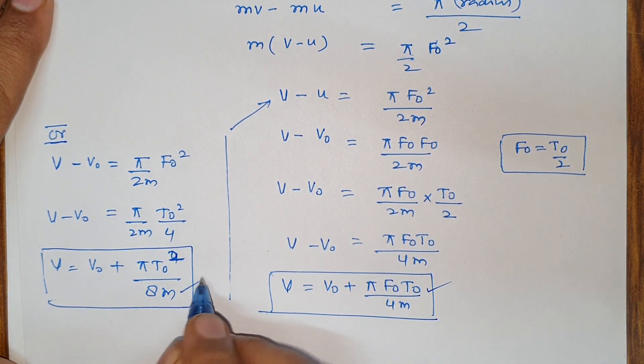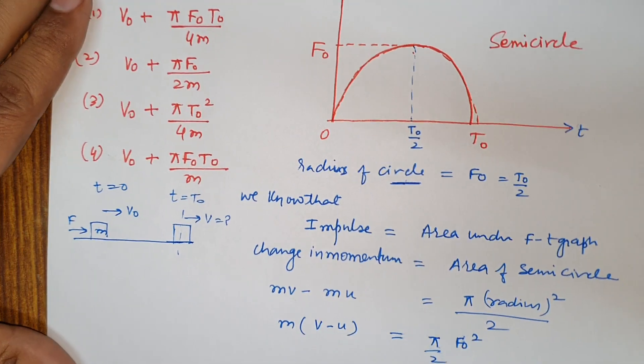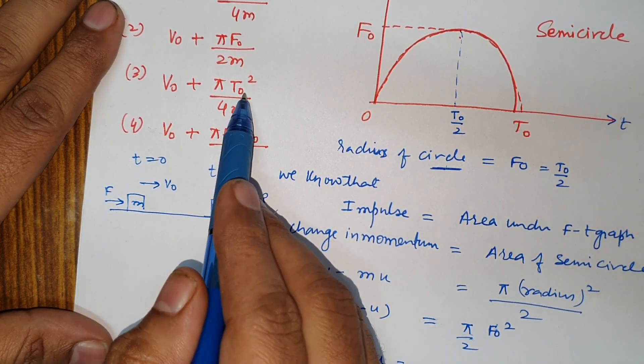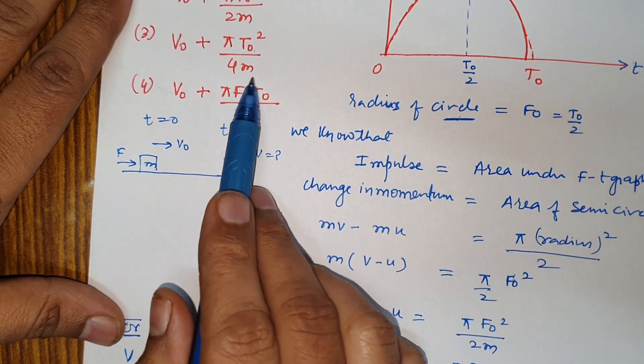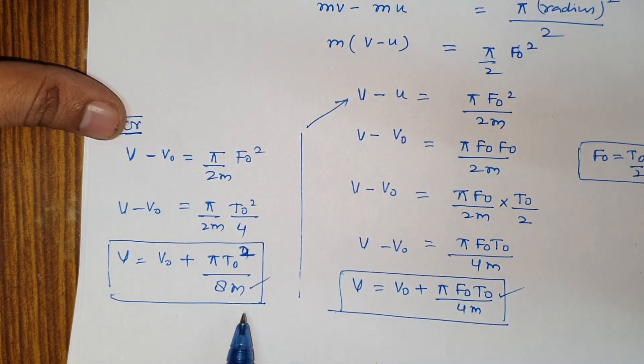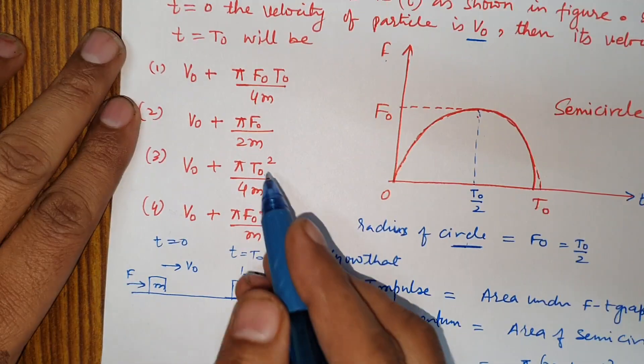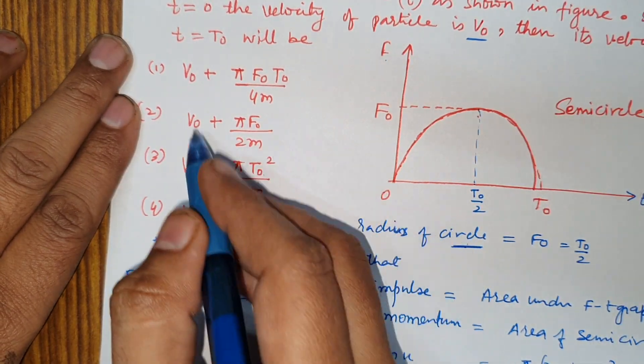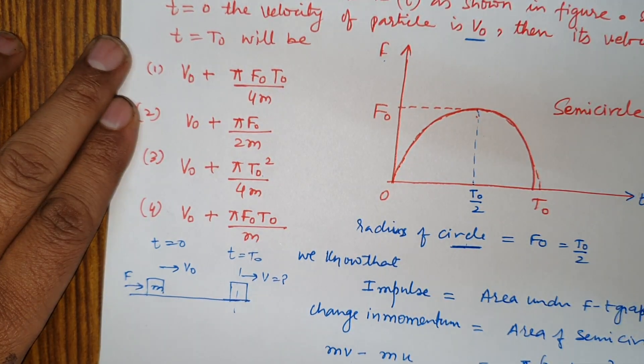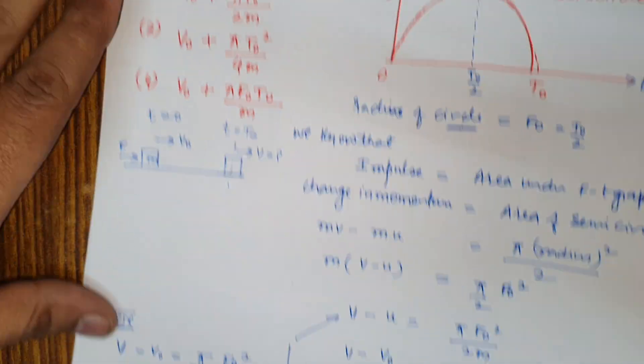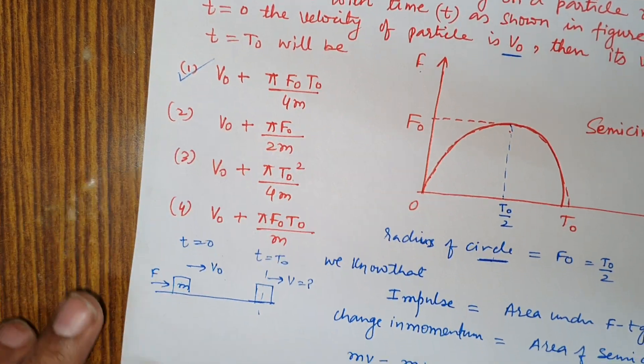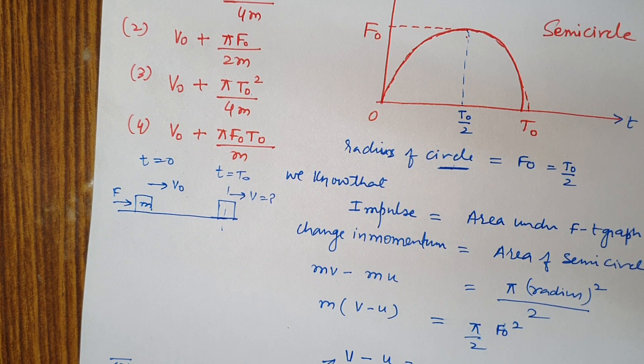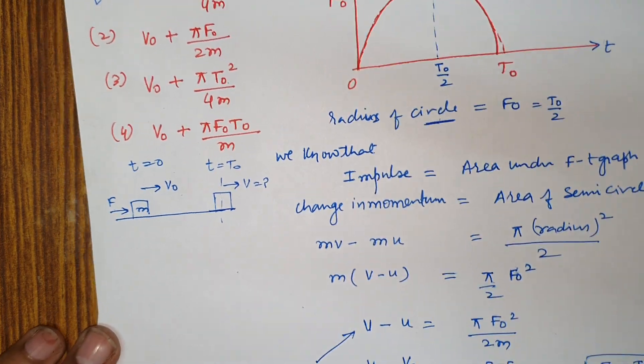One answer could be this, two answers are possible. But in the choices, t0 is there but t0 square is also there. This t0 square with 4 and with 8, so this choice cannot be. The choice that matches is v0 plus pi f0 t0 by 4m, the first choice is matching.